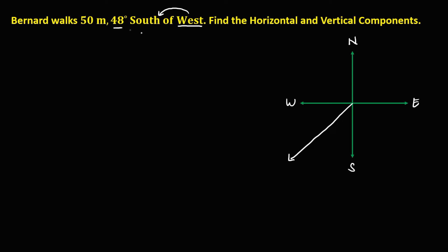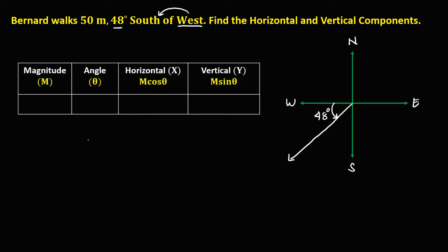Then, the angle is 48 degrees south of west, so from west going to south, that's 48 degrees. Then, to find now the horizontal and the vertical components, so we have this, the magnitude, that's 50 meters. Then, for the angle...